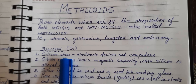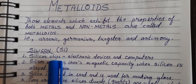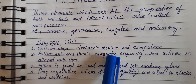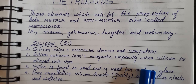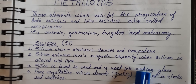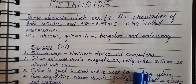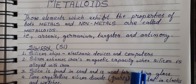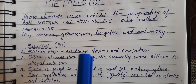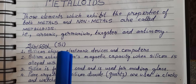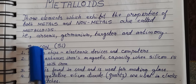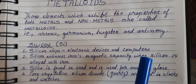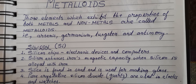Silicon chips are electrical components found in electronic devices and computers. They are used for completing the circuits of electronic devices and computers. Silicon chips are made out of silicon and are used in electronic devices and computer circuits.